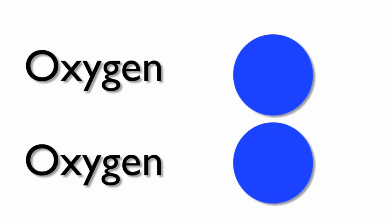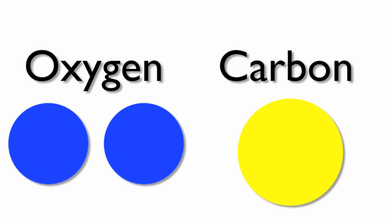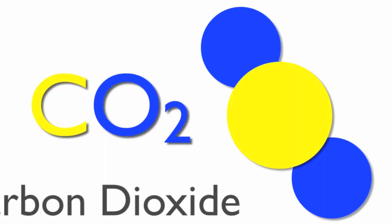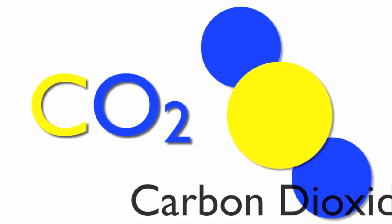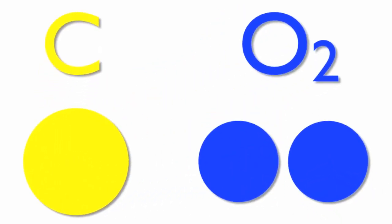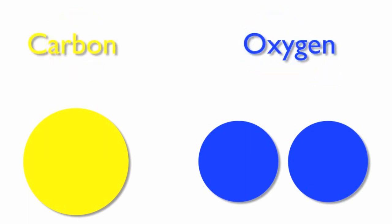Let's take two oxygen atoms and one carbon atom. When these three atoms combine, they form a chemical compound known as CO2. CO2 contains one carbon and two oxygen atoms. This compound is better known as carbon dioxide — one carbon atom and two oxygen atoms, chemically combined.